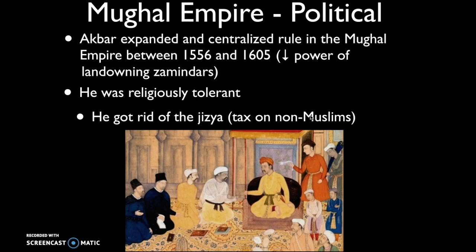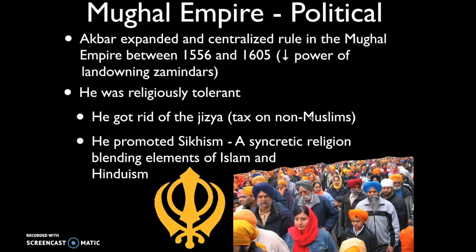Akbar also promoted — or at least did not oppress — Sikhs. Sikhism is a religious tradition that began in the early part of Period 4 in India, blending Muslim and Hindu traditions together. These two religions don't obviously combine easily: Islam is intensely monotheistic — 'there is no god but God' — while Hinduism is polytheistic with multiple gods, though all gods are considered part of the one universal energy force, the Brahman.